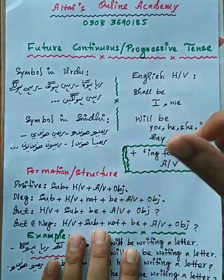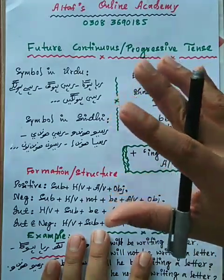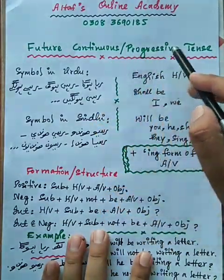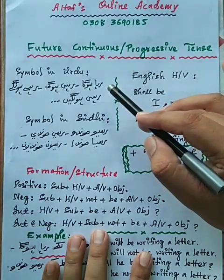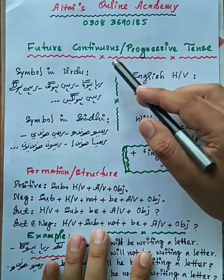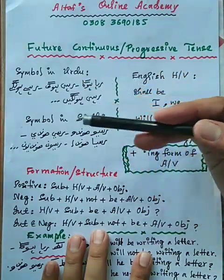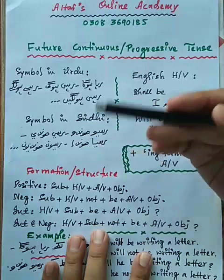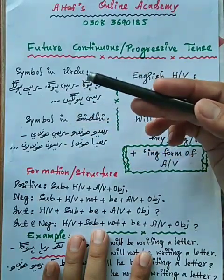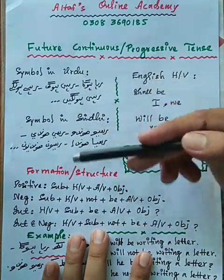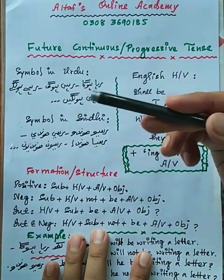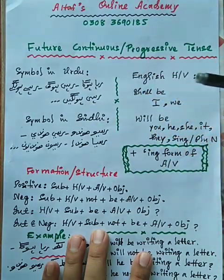Aaj hum continuous family ke last tense, yani future continuous ya progressive tense ki taraf badh rahe hain. Isko Urdu mein 'zaman mustaqbil jari' kehte hain, yani jis mein mustaqbil mein dikhaya jaye ke kaam chal raha hai, jari hai. Ya 'mustaqbil istamrari' bhi isko kehte hain.